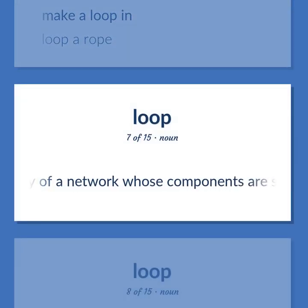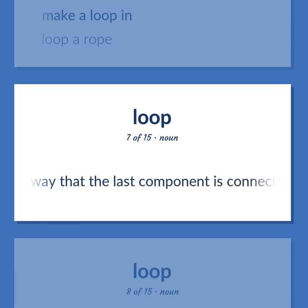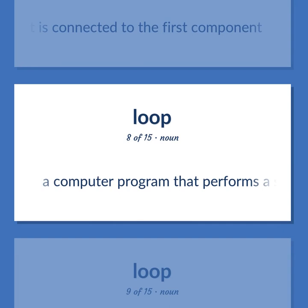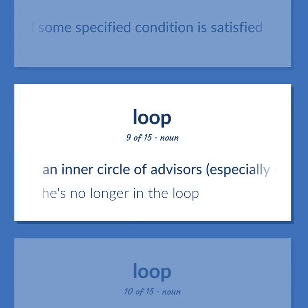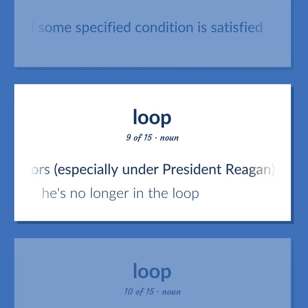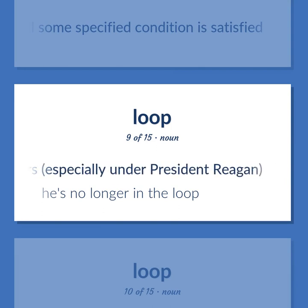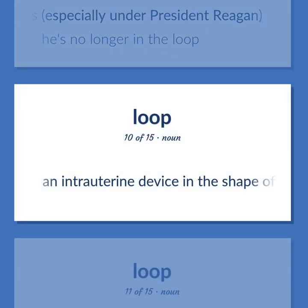The topology of a network whose components are serially connected such that the last component is connected to the first component. A computer program that performs a series of instructions repeatedly until some specified condition is satisfied. An inner circle of advisors, especially under President Reagan. He's no longer in the loop. An intrauterine device in the shape of a loop.